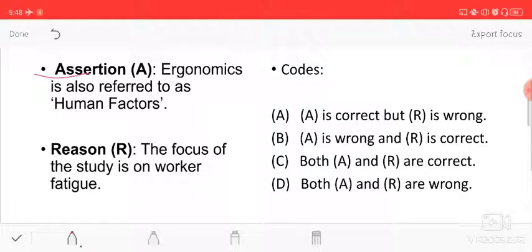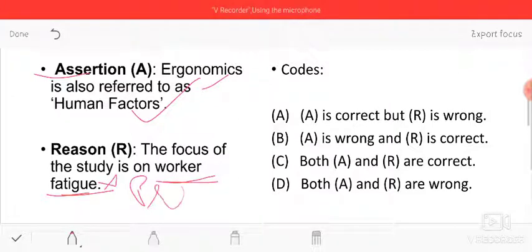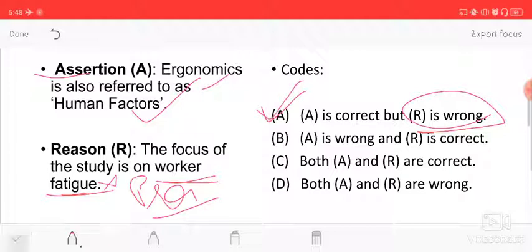Next: assertion - ergonomics is also referred to as human factor. Reason - the focus of study is on worker fatigue. Ergonomics is human factor, it is true. But the focus of ergonomics study is not on worker fatigue, it's on productivity. The correct answer is A is correct but R is wrong, so option A is the correct option.